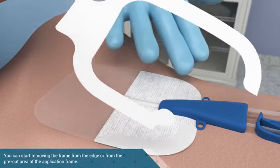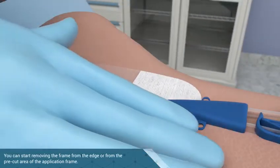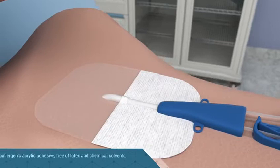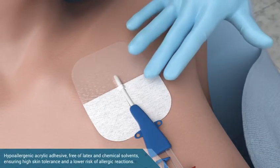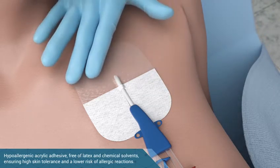Slowly remove the frame and press along the edge of the dressing as it peels off. Lightly press on the film to help the dressing adhere to the skin and the catheter connector.